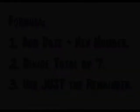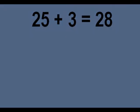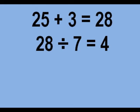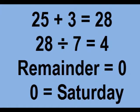Three is the key number for this month. 25 plus three is 28. Next step, divide by seven is four. We don't care about the four, we care about the remainder of zero. If it's a zero, the 25th is a Saturday.